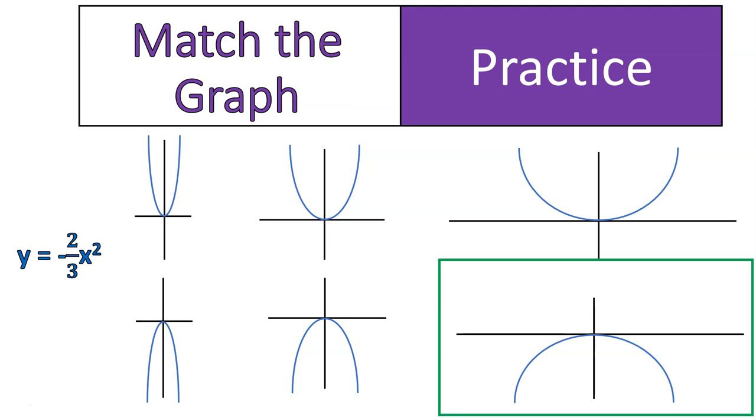What would be this one? It's opening downwards because it's a negative number, and it's also wider because it's a fraction. That's how this works. Okay.